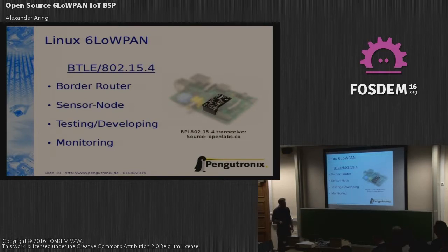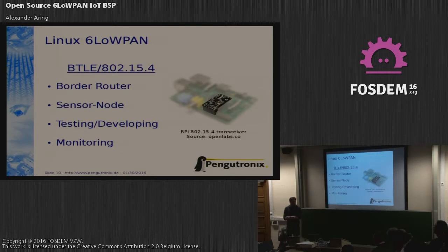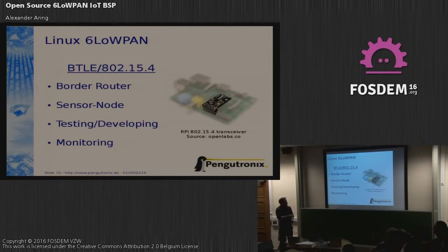A typical use case is something like a border router — that's for routing from an Ethernet IPv6 network into a 6LoWPAN network. Or a simpler one: a central node for measuring temperature or other sensor data. You can also use it for testing. I heard that in this dev room there's a lot of IoT software presented, and if you have an IPv6 connection for your IoT software, you can simply test whether it works with the 6LoWPAN stack for Linux. You can also use it for developing.